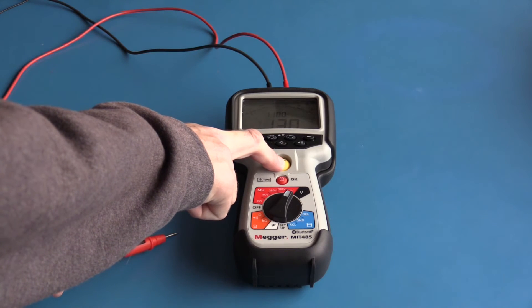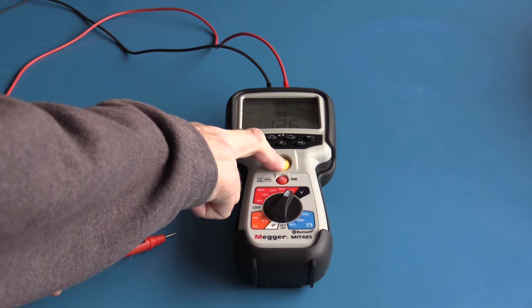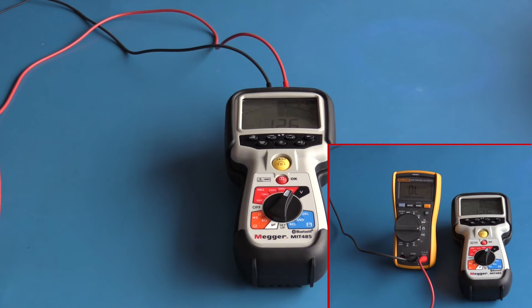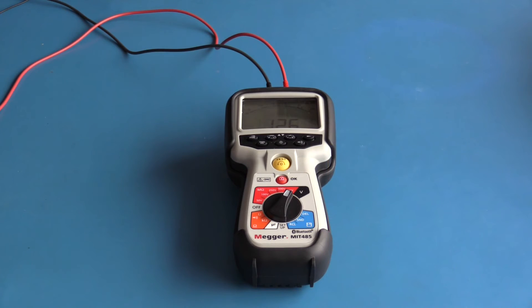This reading is only telling me that there is a path to ground. This test just demonstrates the need sometimes for a higher voltage when making resistance measurements. Tests like this would be performed on motor windings where you're looking for a breakdown in the insulation.